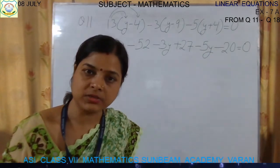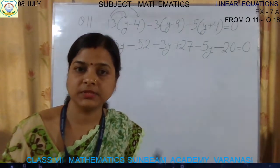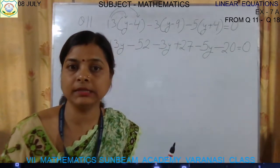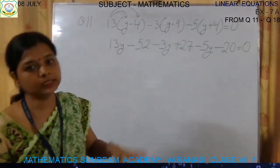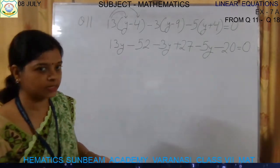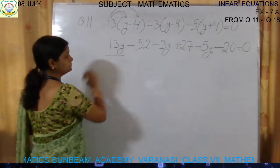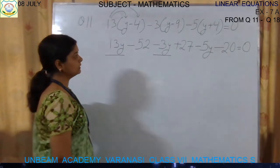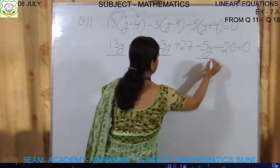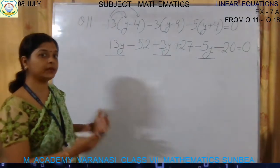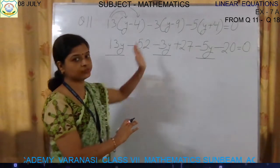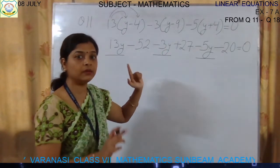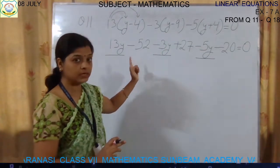After opening the brackets, we will separate the variable terms on one side and the constant terms on the other side. We will transpose the constants to the other side. The sign will change when transposing — whatever its sign is, it will change.